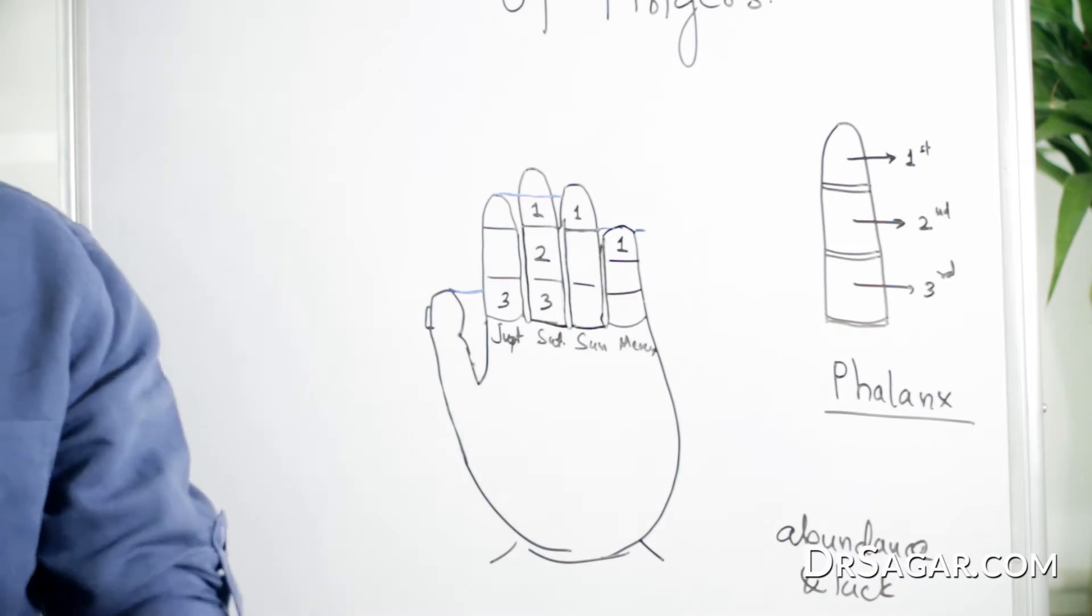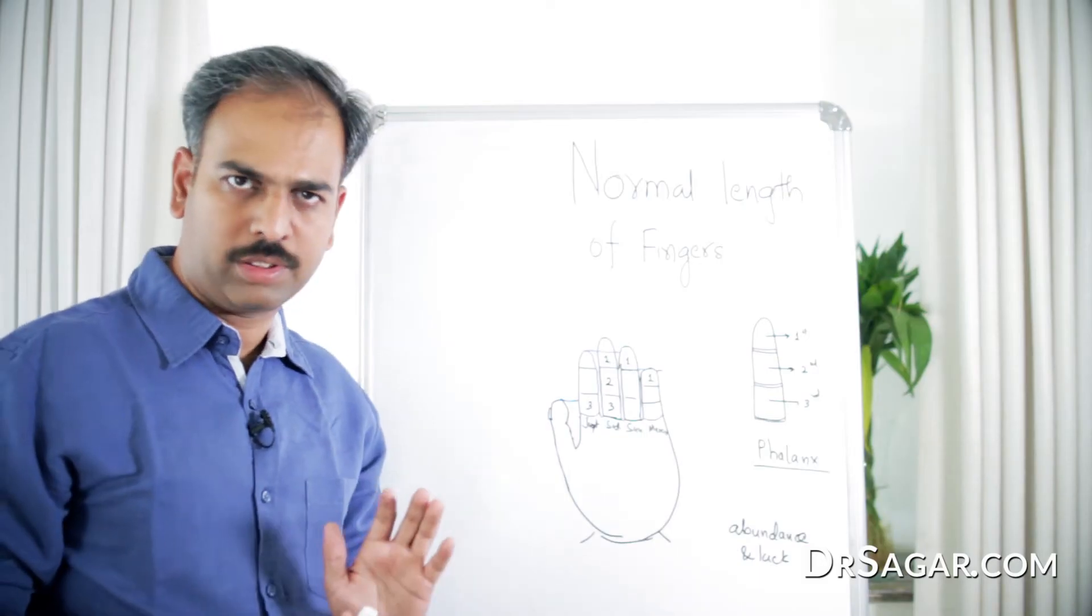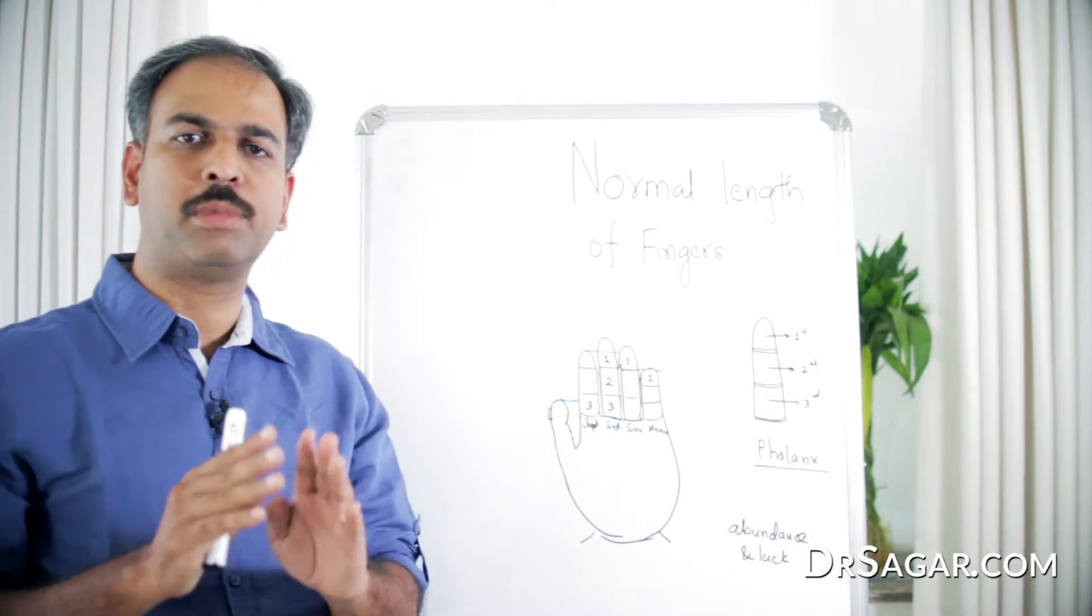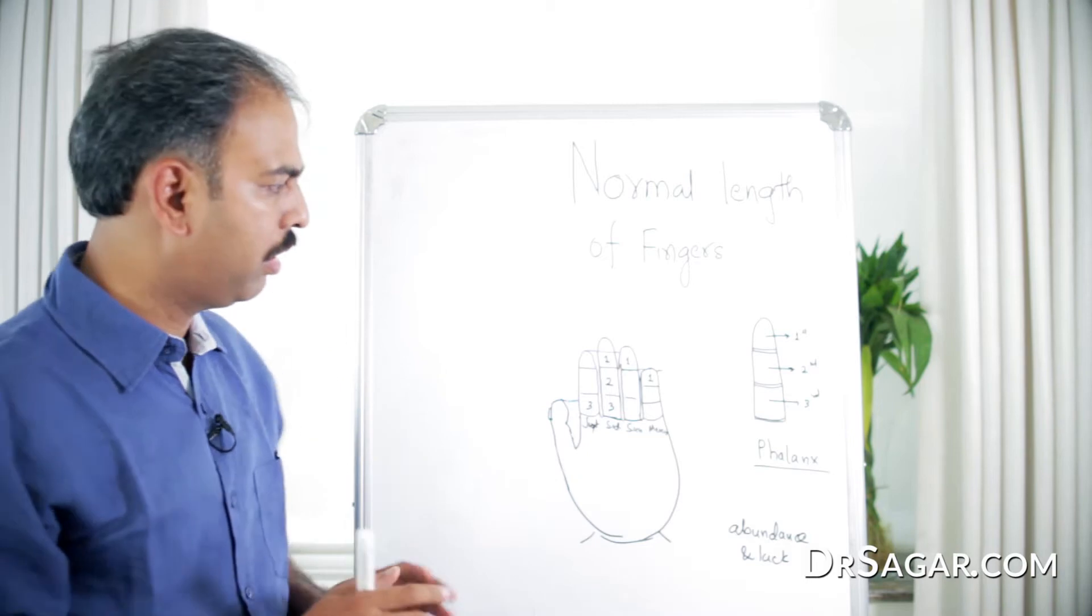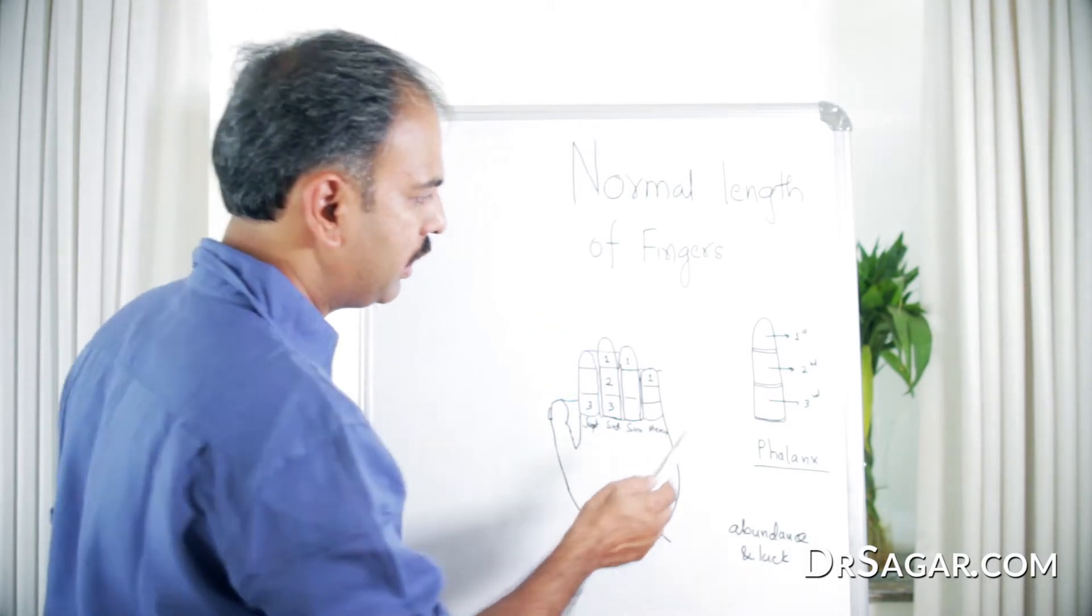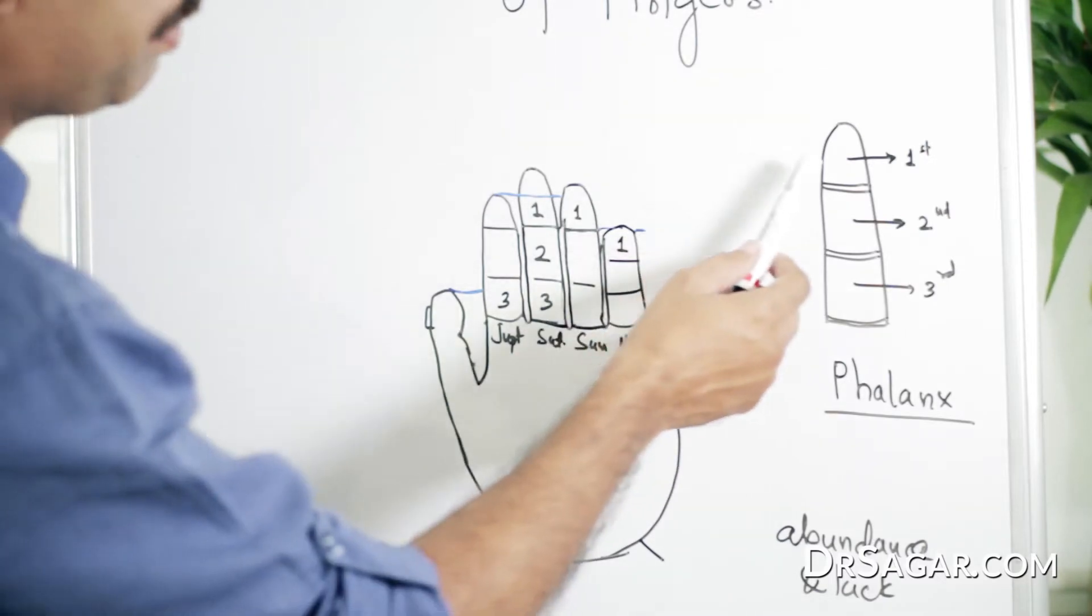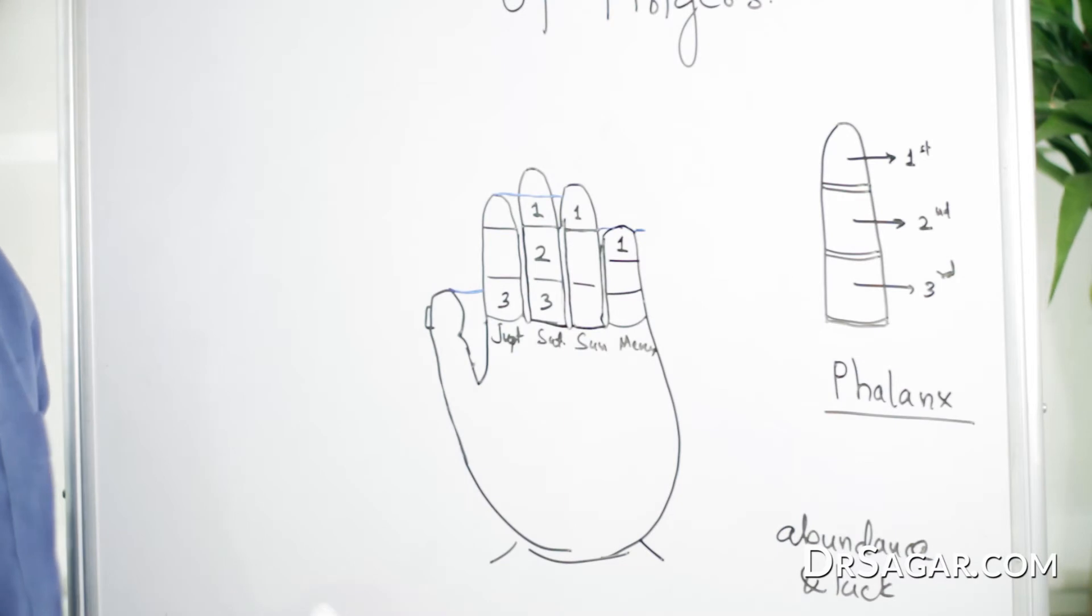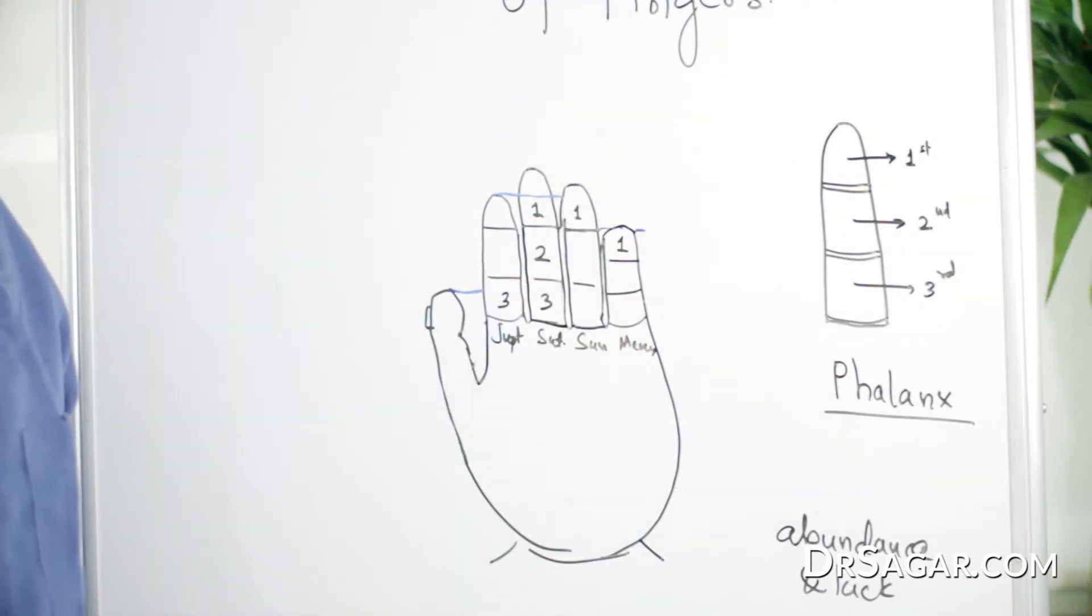Now, one must know the normal length of fingers. It has some scale. I'll explain how the scale is done with the fingers. Before that, each finger is divided into three parts. Each part is called a phalanx. Each finger has three phalanges.